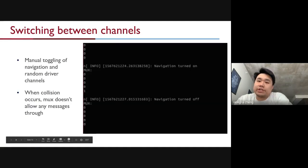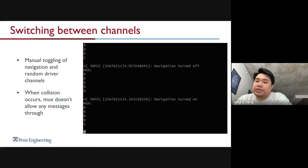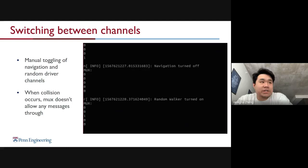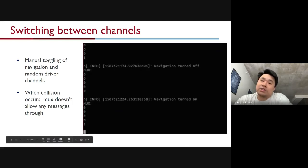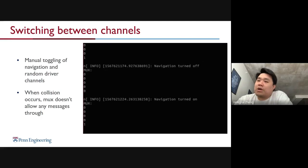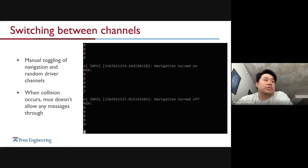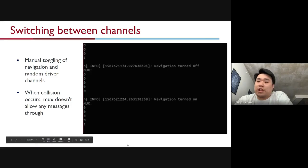Switching between channels is easy. Manual toggling of navigation and random driver channels is shown in the animation. This is example output you'll see printed in the terminal running the simulator. When a collision occurs in the simulator, the Mux won't allow any message through until the user switches to a different channel. You'll have to select a channel manually and then back the car out of the collision.